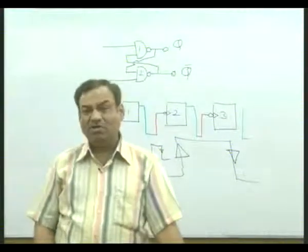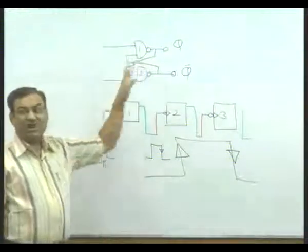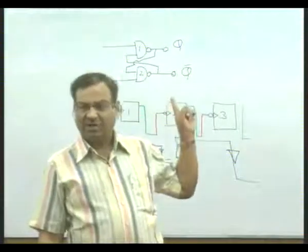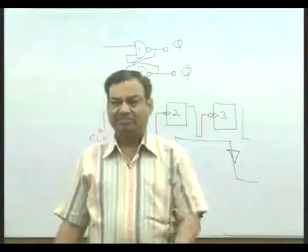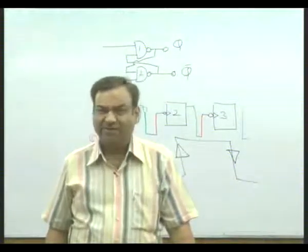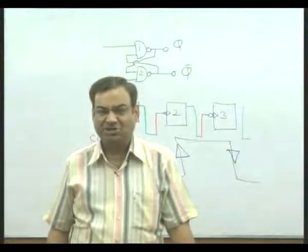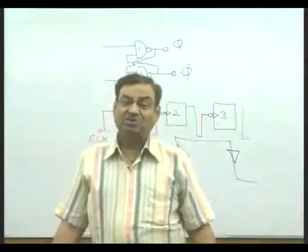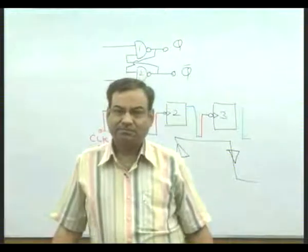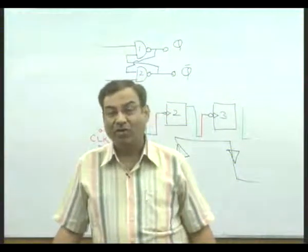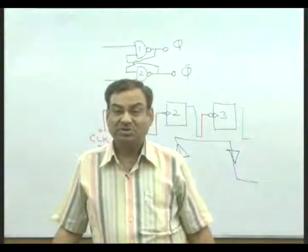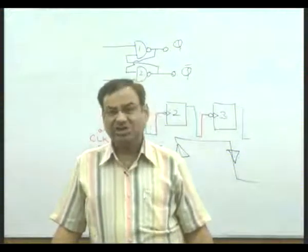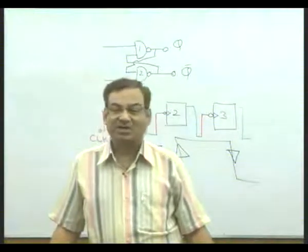Race around condition comes up as a problem many times. In an SR flip-flop, race around condition will be present. JK flip-flop tries to avoid this race around condition, but still there are some traces of race around in JK flip-flops. Therefore, we go for master-slave flip-flops — master-slave SR flip-flop or master-slave JK flip-flop.